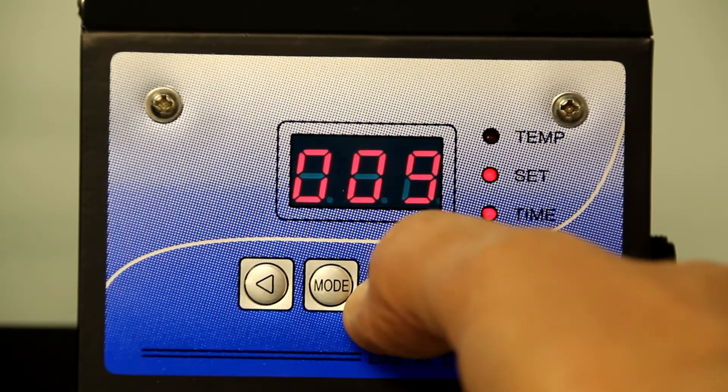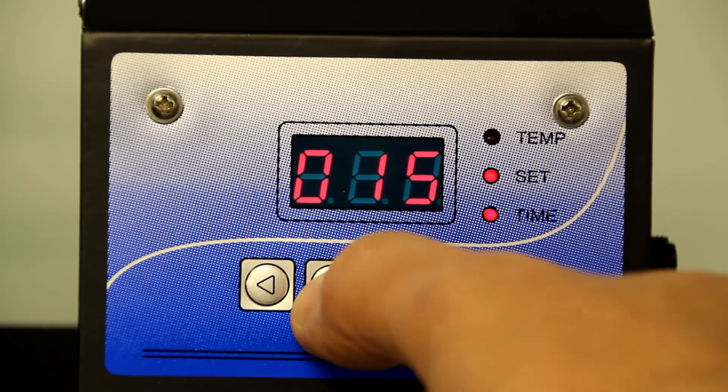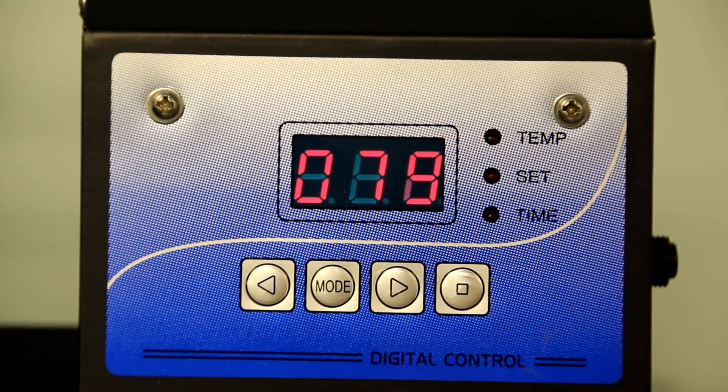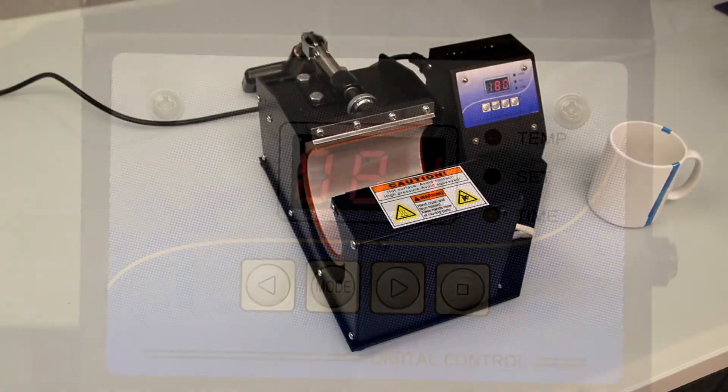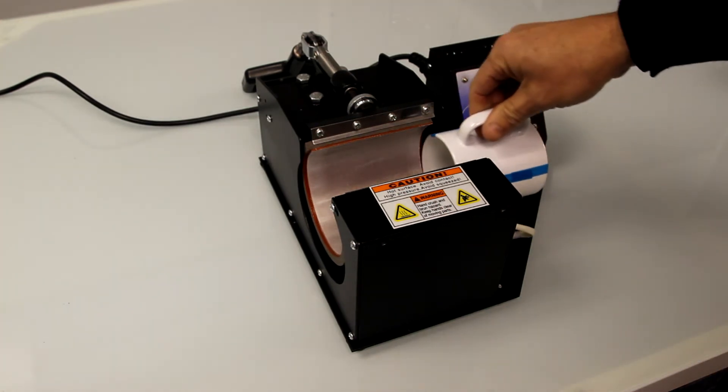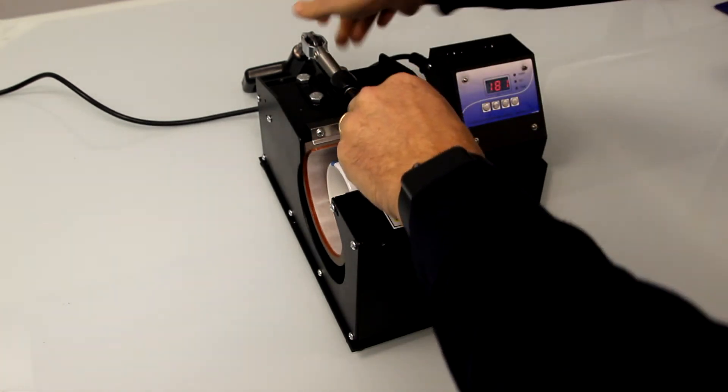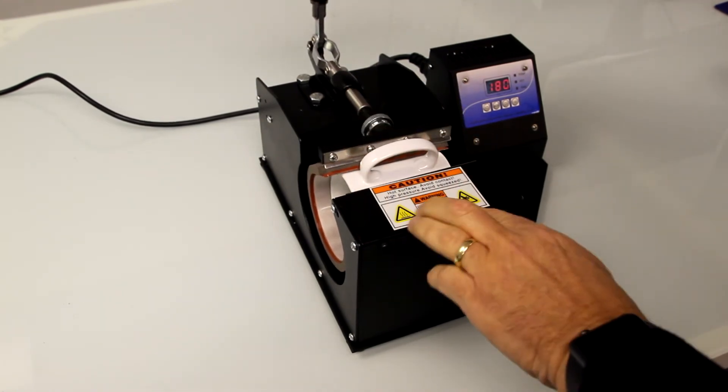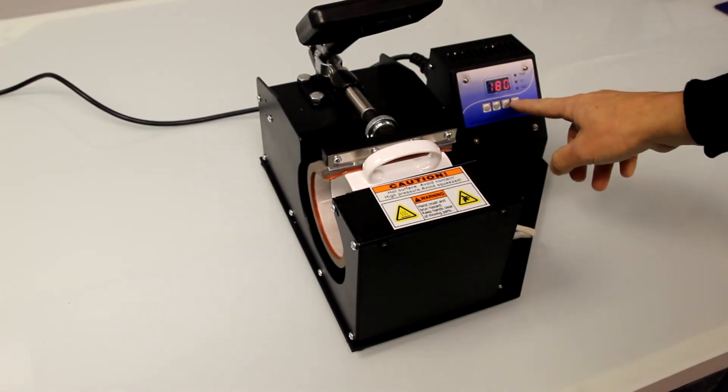Push the mode button to turn out all the LEDs and the press will begin to heat up. When up to the set or standby temperature the press will beep. Place the mug in the press, close the clamp and press the square run button.